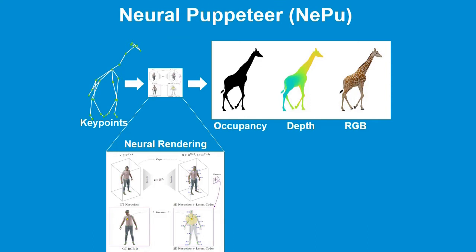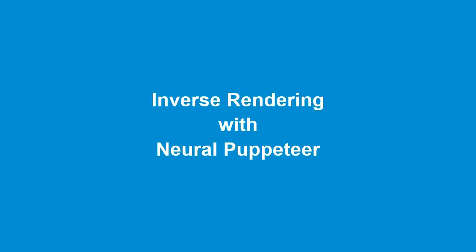Our approach, called Neural Puppeteer, is based on an efficient and flexible rendering pipeline that renders image properties like occupancy, depth, and texture given 3D keypoints. In case you are wondering how neural rendering and pose estimation connect, the answer is inverse rendering. In the case of Nepu, we can even estimate 3D keypoints from multi-view silhouettes only, making our pose estimation method independent of texture.